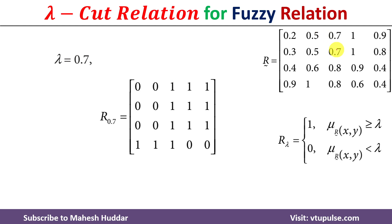Similarly, where the fuzzy relation contains 1, which is greater than 0.7, the lambda cut relation contains 1. This is how we can calculate the lambda cut relation for a given fuzzy relation.